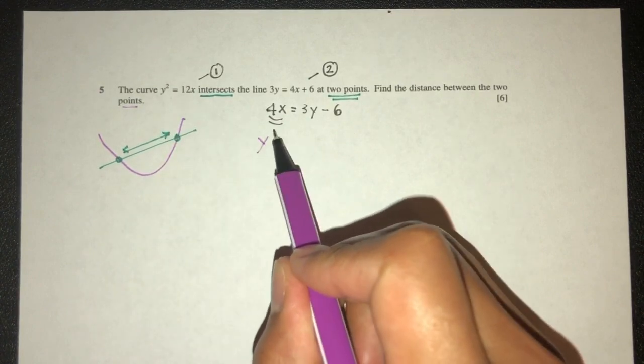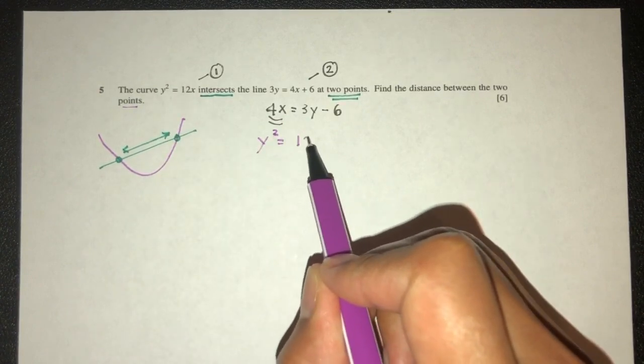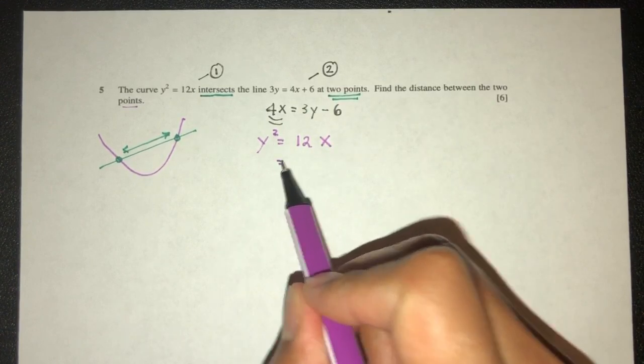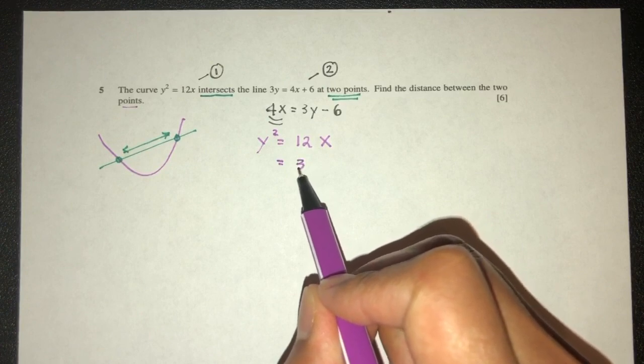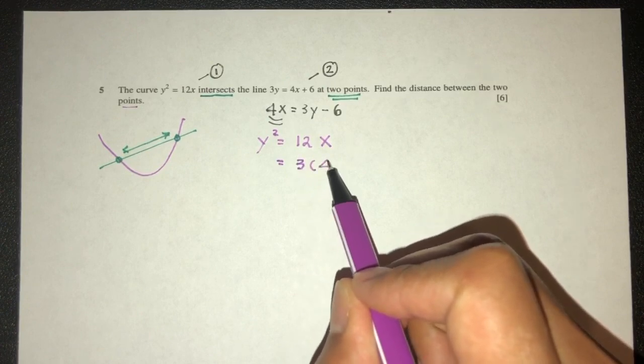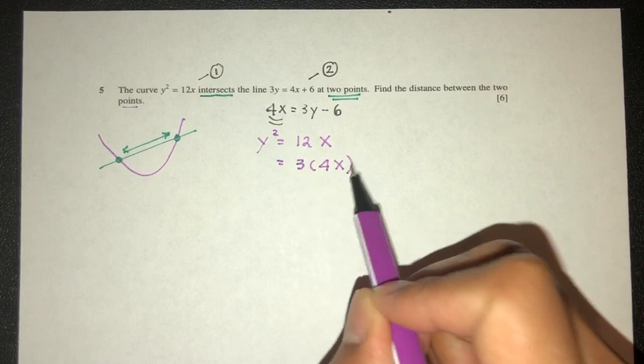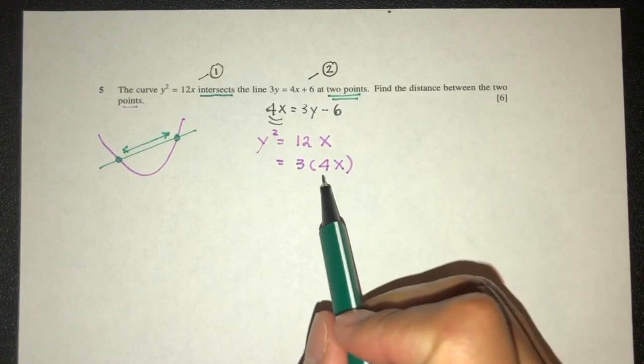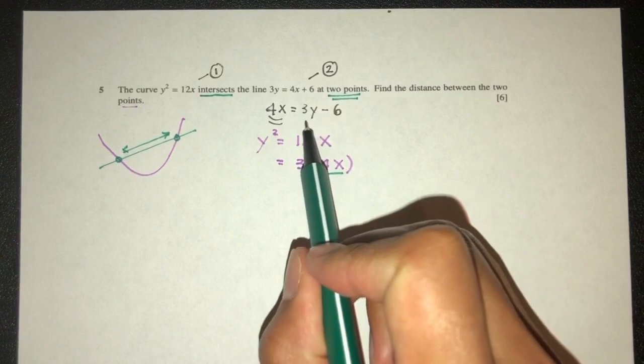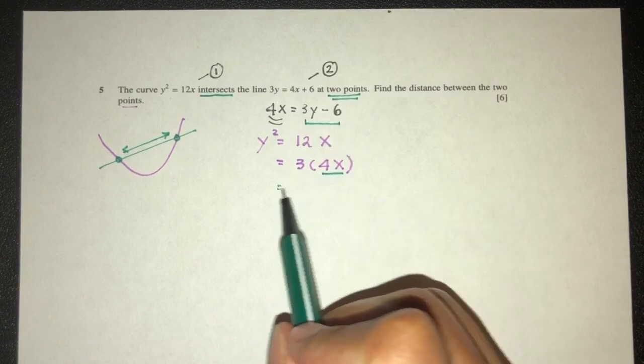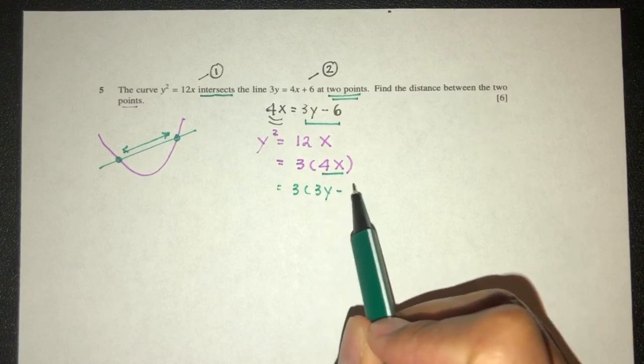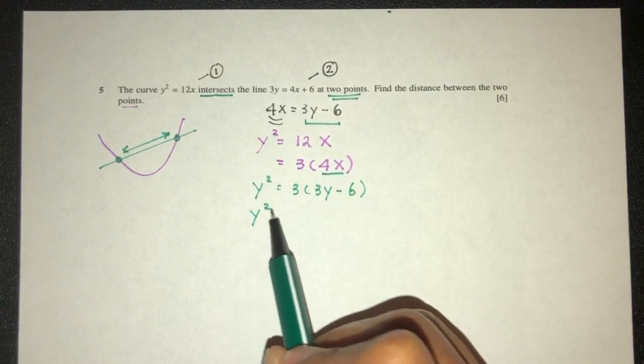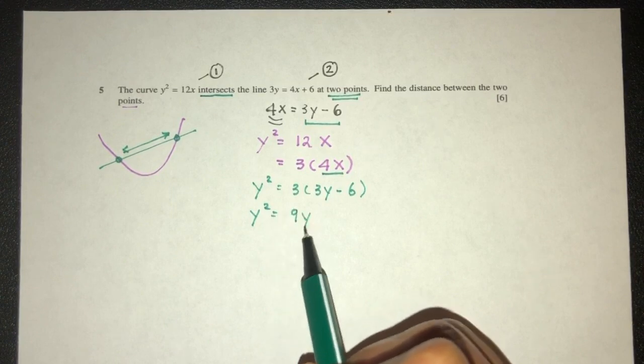So here I have y squared equal to 12x. But now what is 12x? Ah 12x we understand it is 3 times 4x. Okay so now I can see or I hope you can see why I chose 4x. Now we understand 4x is also equal to this one. So you'll be 3 times 3y minus 6. That will be y squared. So y squared will be 9y minus 18.